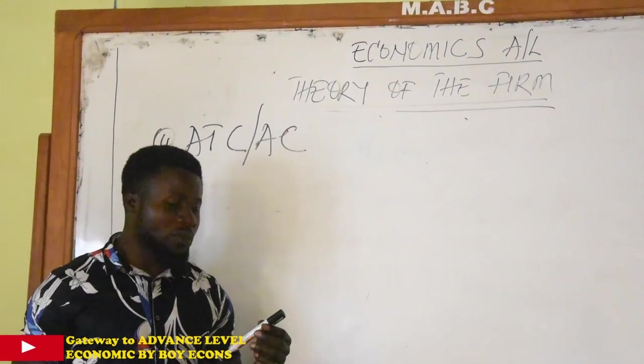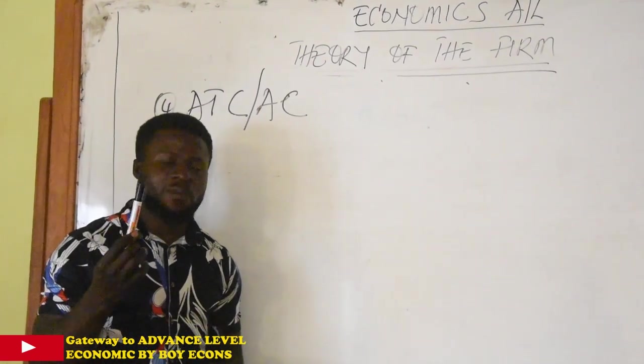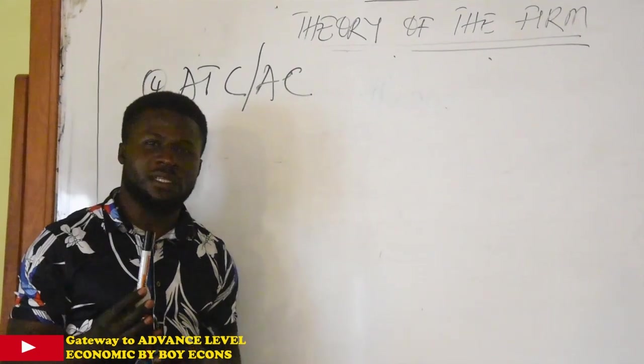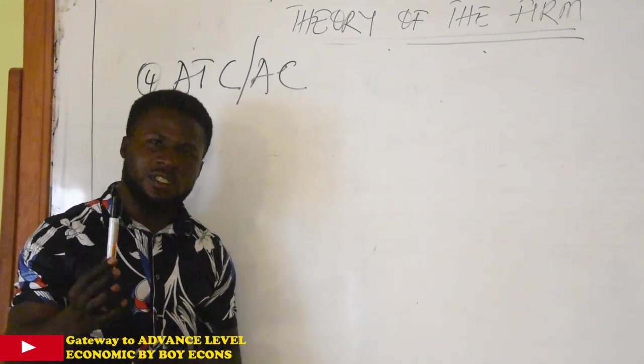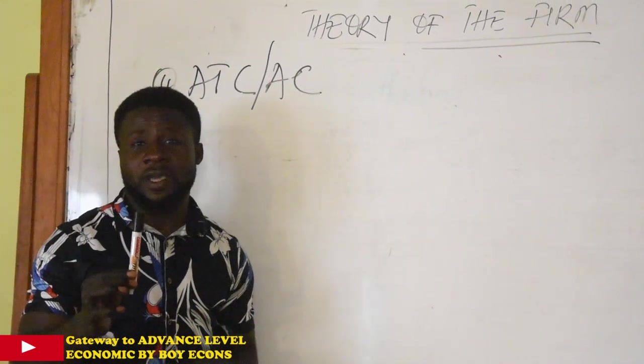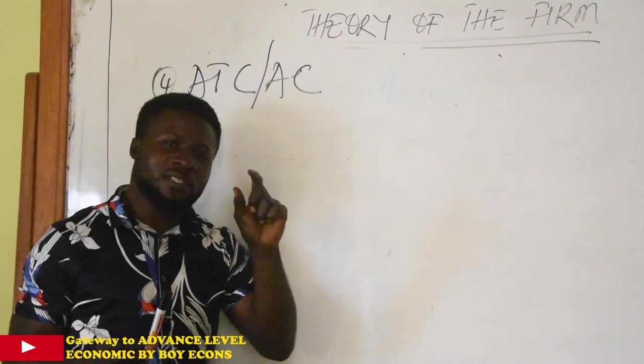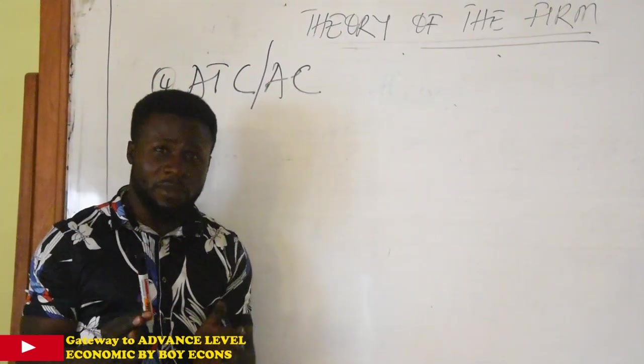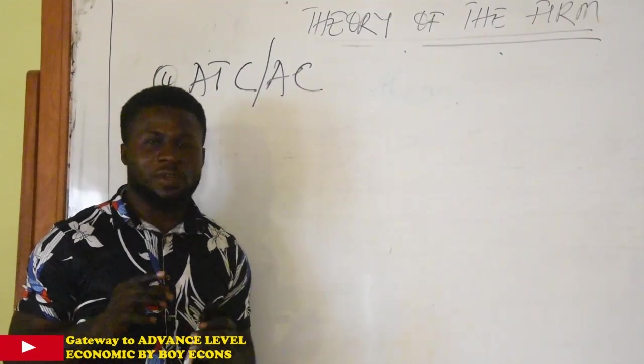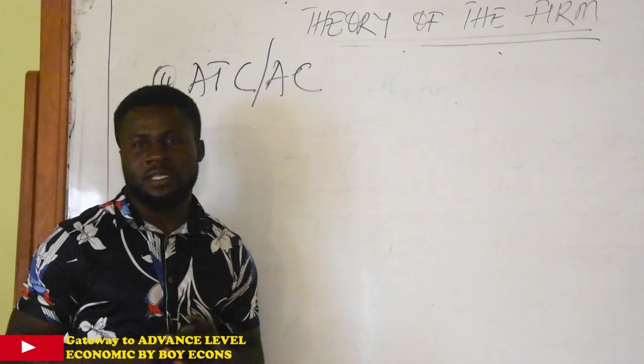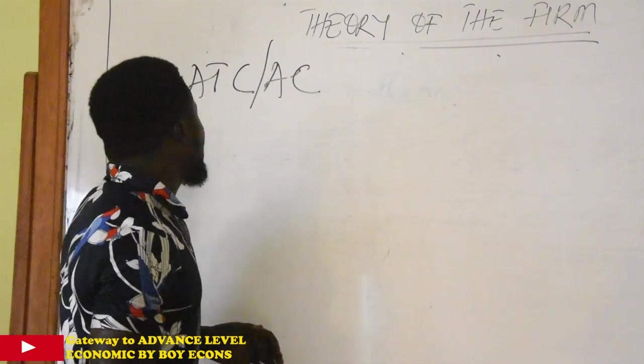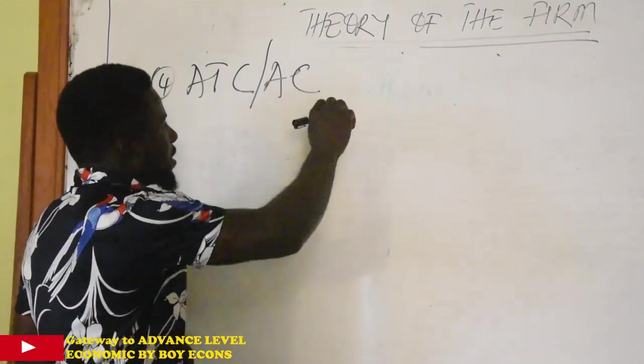So we give an example: if you are producing 10 of these pens, and it costs you 1000 francs to produce the 10 pens, what is the cost you incur to produce each pen? The cost of each pen is going to be 1000 francs, that is the total cost of the pens, divided by the 10 pens, that will give you 100 francs. That will be the cost you incur on each pen. So that is what average total cost is.